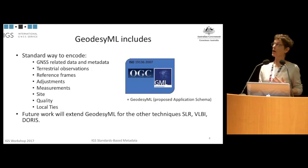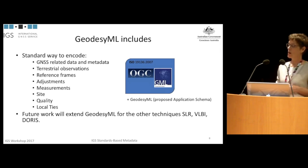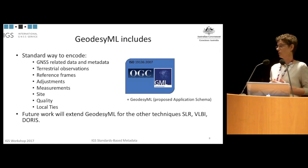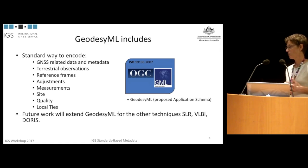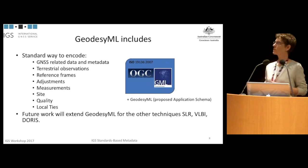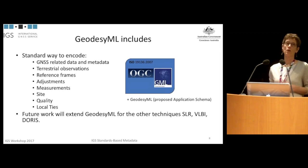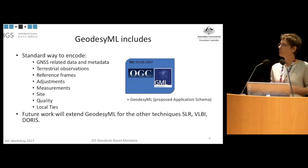GeodesyML has been put together to include the necessary metadata for GNSS Geodesy, including related data and metadata: observations, reference frames, adjustments, measurements, site quality, etc. It will take some future work to extend this schema for other techniques, but that's entirely possible within this methodology of using GeodesyML to extend it.